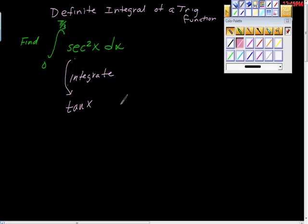Because we're going to use the fundamental theorem of calculus, we're going to take tan of x as evaluated from zero to pi thirds. We're going to just go straight to that. As we go straight to that, it's going to look like this.